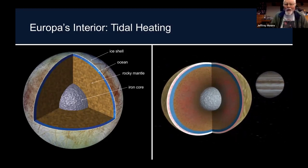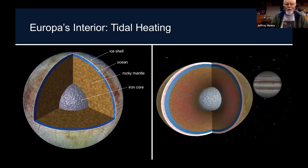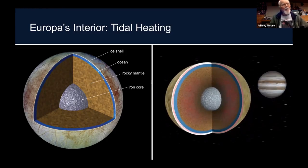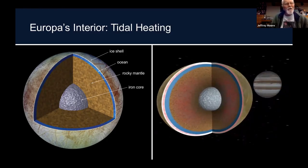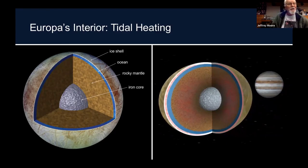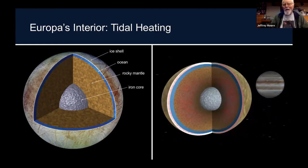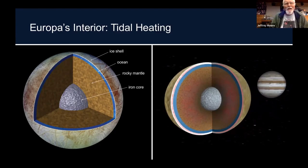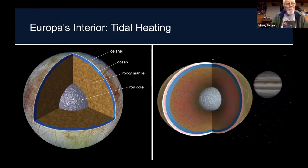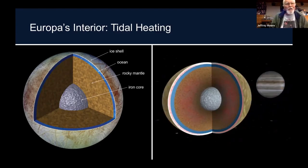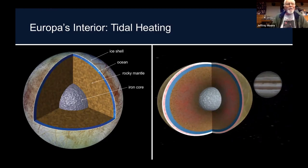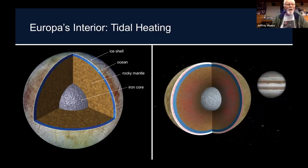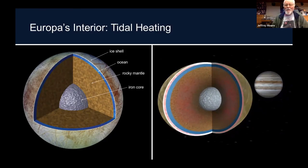There is more liquid water on Europa than on the surface of the Earth. And because Europa has only one-sixth the surface gravity of Earth, the pressures at the bottom of Europa's ocean are comparable with pressures at the bottom of the deepest parts of Earth's oceans.